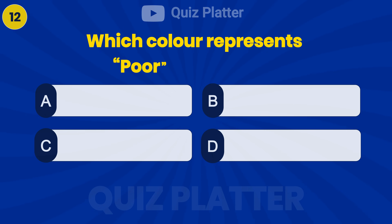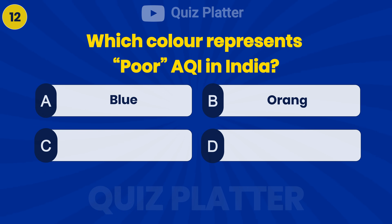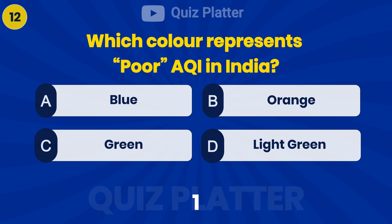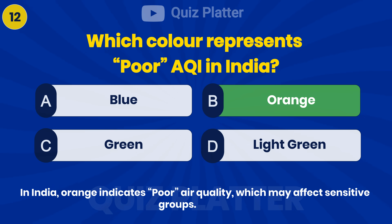Which color represents poor AQI in India? Answer: B — Orange.